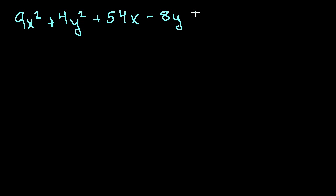So what I have here is 9x² + 4y² + 54x - 8y + 49 = 0.